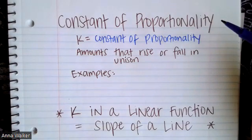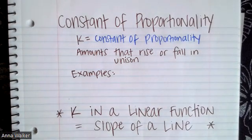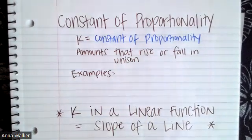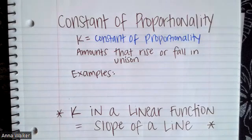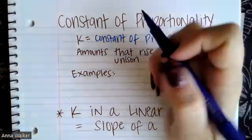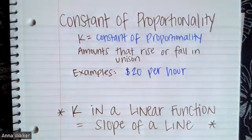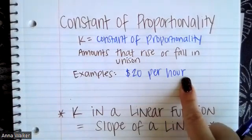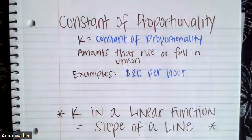So the constant of proportionality when we're looking at some sort of proportional relationship, we might have to take our brains back to our previous unit when we learned about solving proportions. The constant of proportionality is when we look at the amounts that rise or fall in unison with each other. So for example, if we are discussing how much somebody makes at work, if someone makes $20 per hour, we would say that that is considered the constant of proportionality.